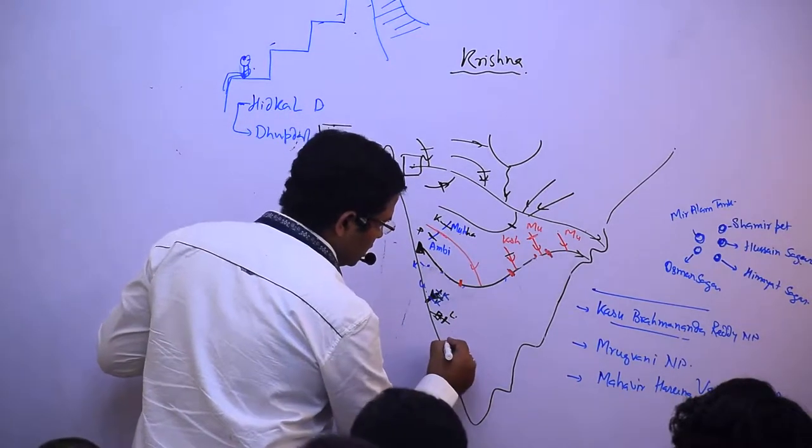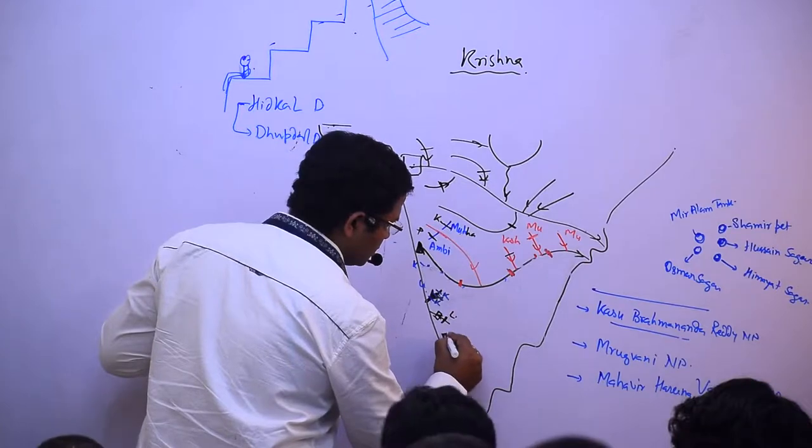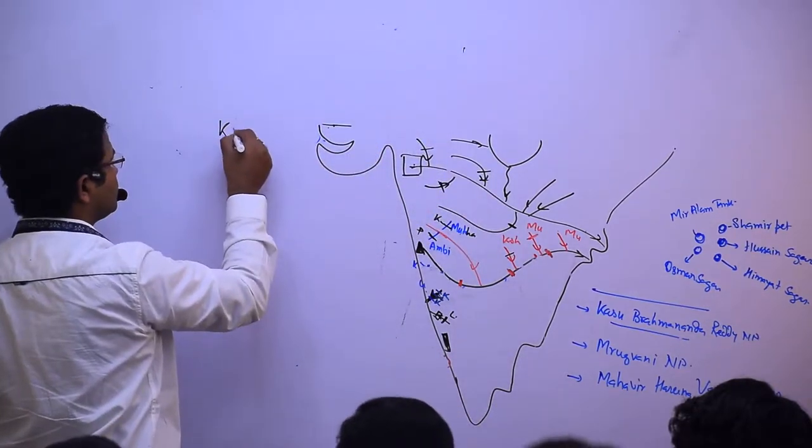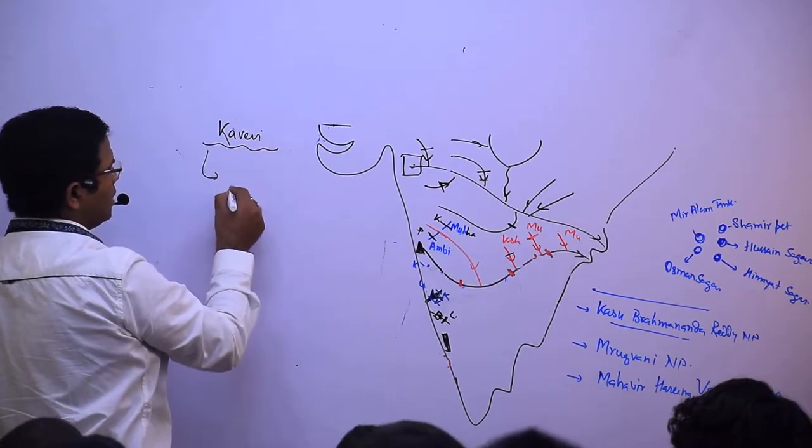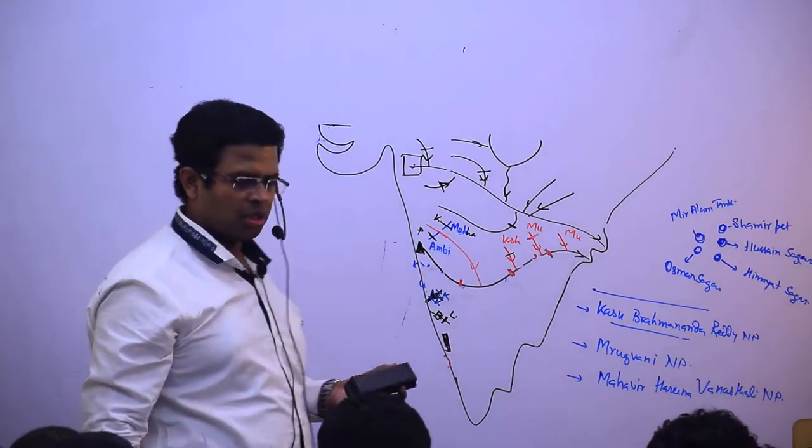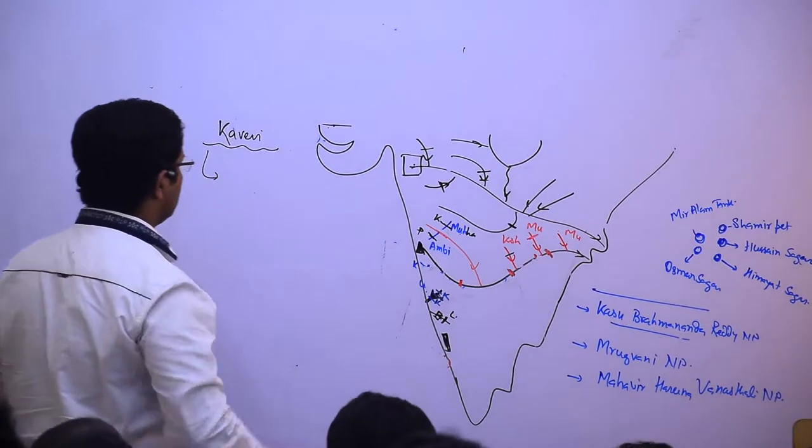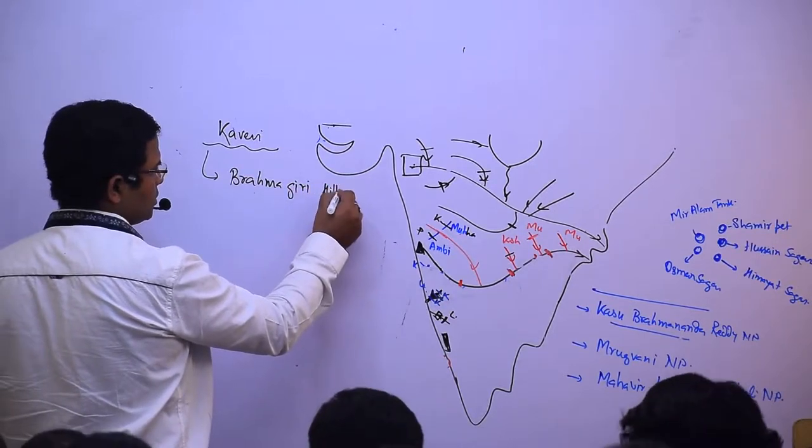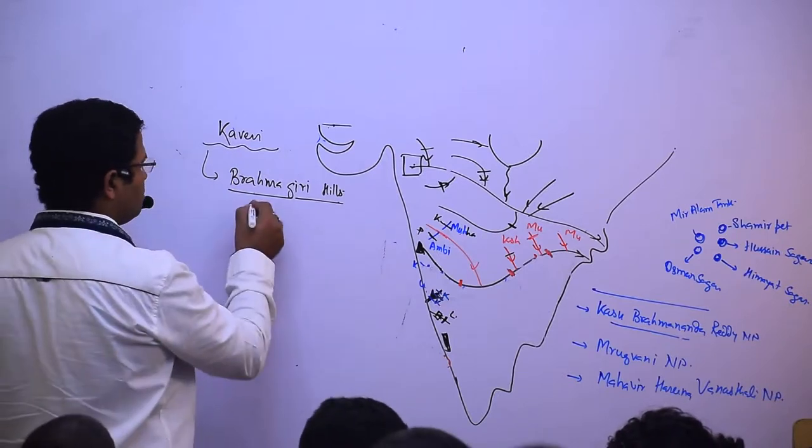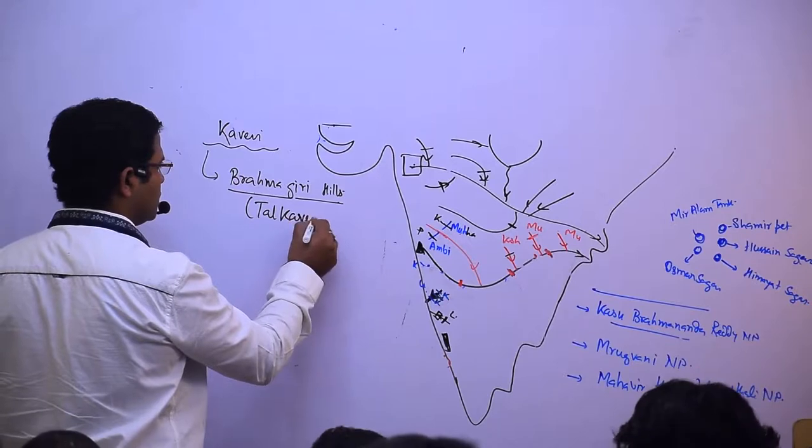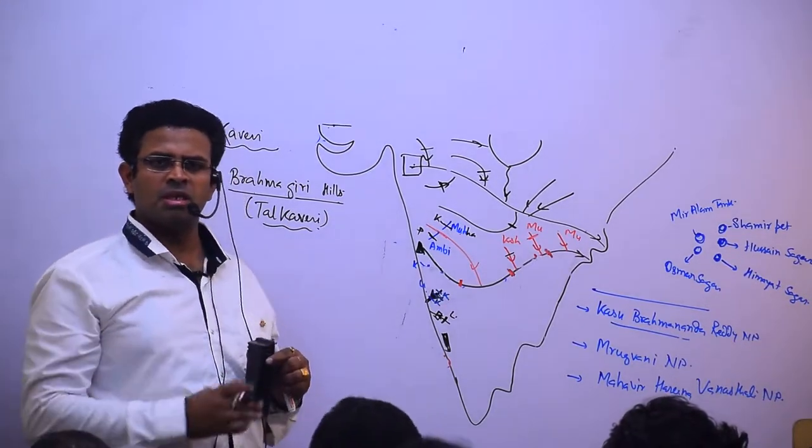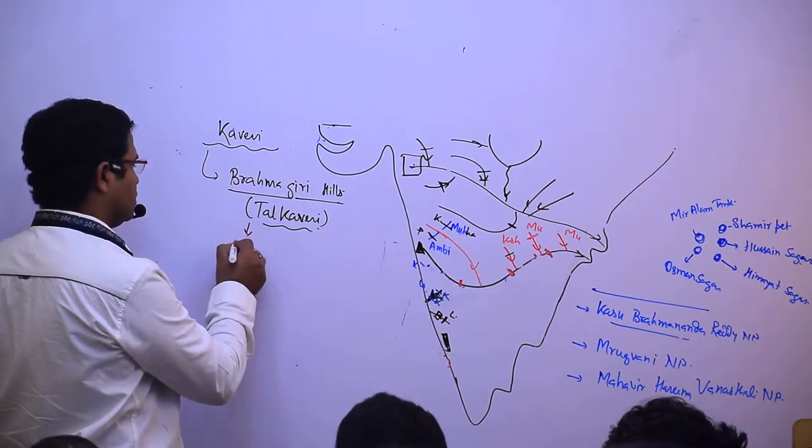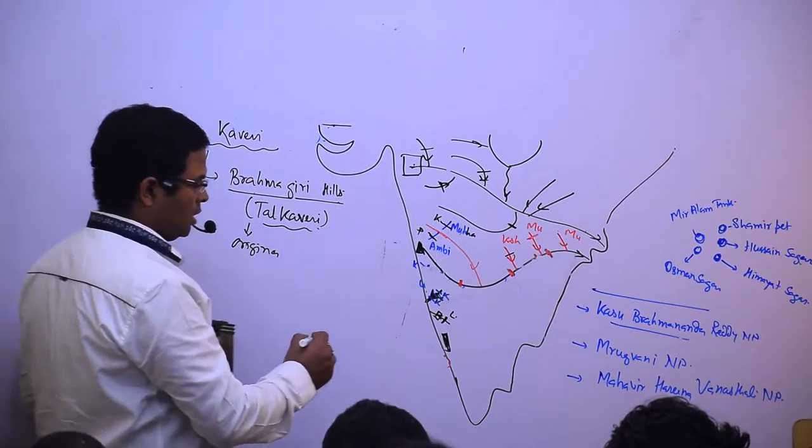Now we are coming towards Brahmgiri hills, where we are going to see about Kaveri river. There are different hills - Baba Bhutan hills, Pustagiri hills, Brahmgiri hills. On Brahmgiri hills there is Taal Kaveri, a lake, and from here Kaveri river has been originated.